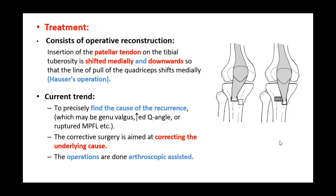Treatment consists of operative reconstruction. The insertion of the patella tendon on the tibial tuberosity is shifted medially and downward, so the line of pull of the quadriceps shifts medially, preventing the patella from dislocating laterally during quadriceps contraction. This operation is known as the Hauser operation.